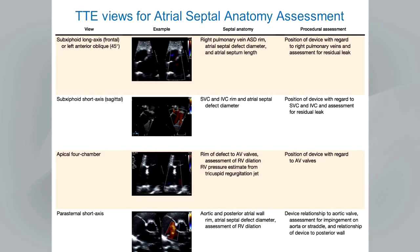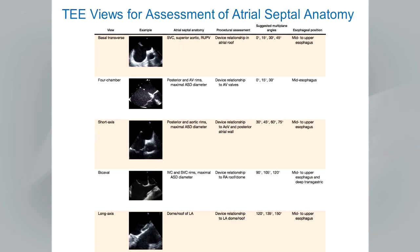I would refer you back to the guidelines document to review these tables and views. For transesophageal echo, five key views are recommended: the basal transverse from the mid-to-upper esophagus, a four-chamber view, a short axis view from the mid esophagus, a bicaval view, and a long axis view. A further theme is that sequential multi-plane angles are employed — stepping through in small increments — to ensure complete interrogation of the structures of interest.